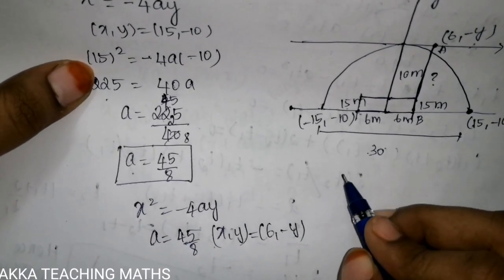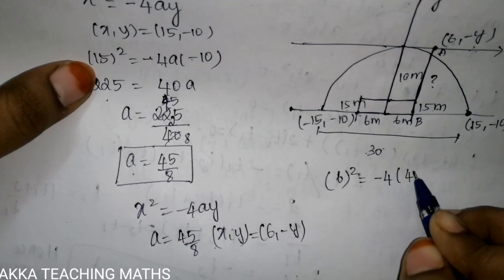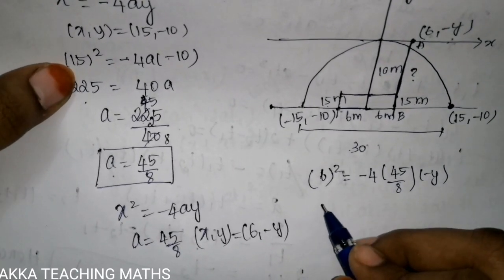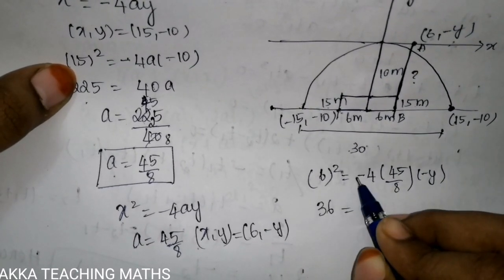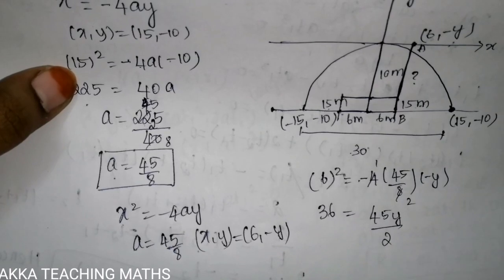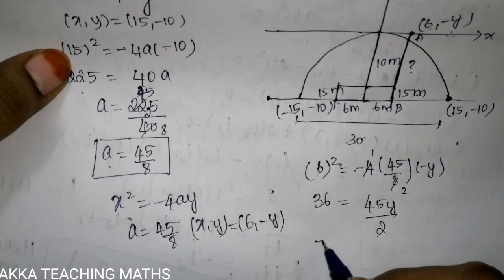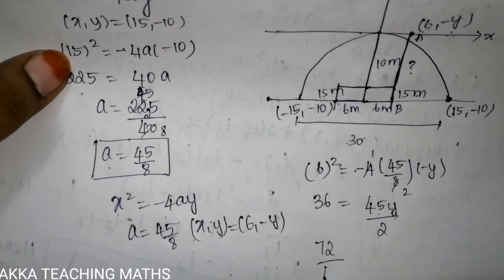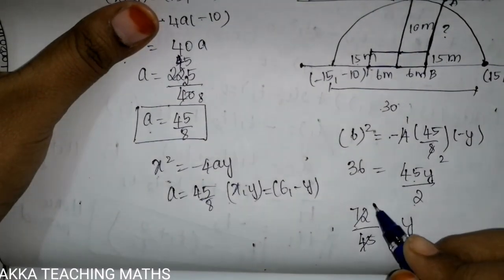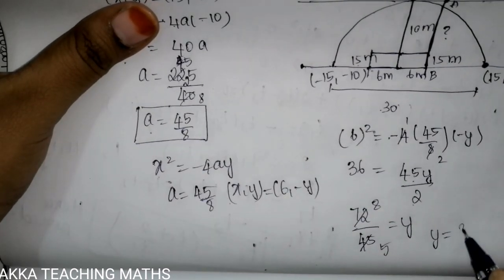So y equals: x equals 6, the whole square, minus 4 by 45 divided by 8. Now 36 into 2 is 72. The denominator is 45, equal to y. Canceling: 8 nines are 72, 5 nines are 45. So the y value is 8 by 5.